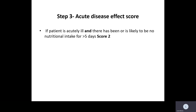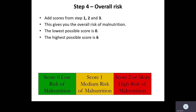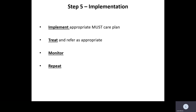The acute disease effect score: if a patient is acutely ill and there is likely to be no nutritional intake for more than five days, they get a score of two. Add the scores from steps one, two, and three to give an overall risk of malnutrition. The lowest possible score is zero and the highest is six. Zero is low risk, one is medium risk, and two or more is high risk of malnutrition. You then need to think about an appropriate MUST care plan, treat and refer as appropriate, monitor, and repeat each week.